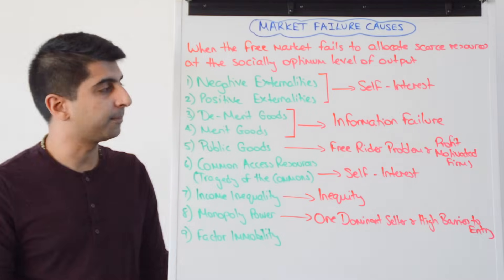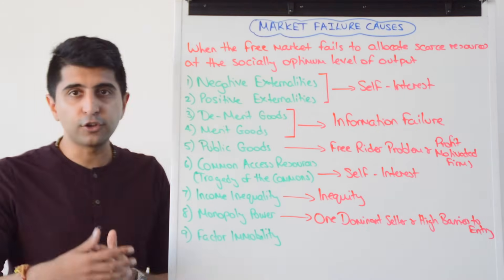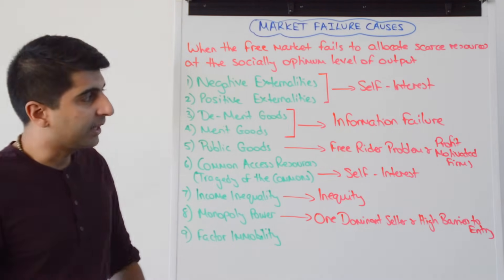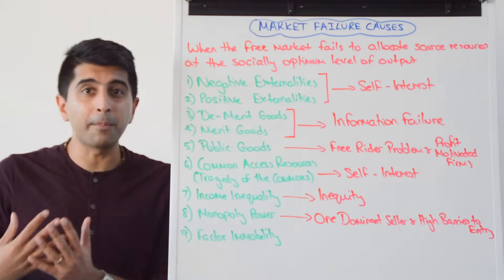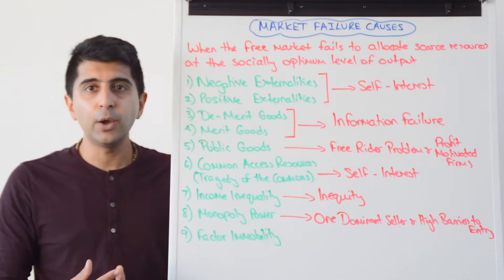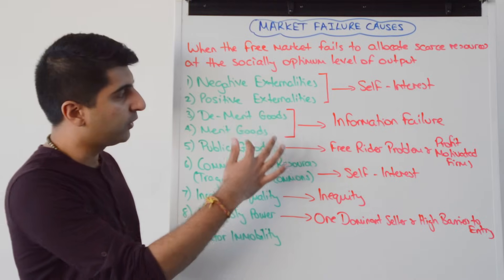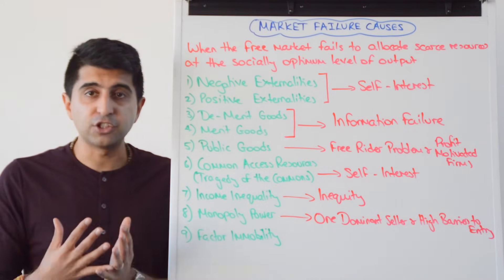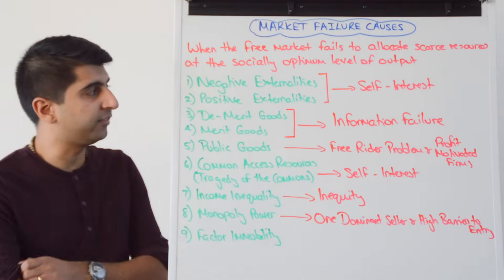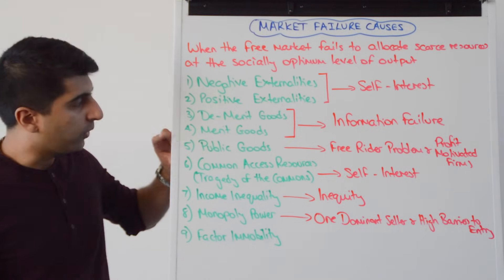Merit and demerit goods are goods or services that are either better or worse for us than we think. The problem is we don't fully know just how good or bad these things are — there is imperfect information, or information failure, which can cause consumers to make irrational decisions. This can lead to the allocation of scarce resources being either too high or too low, similar to what can happen with positive and negative externalities.